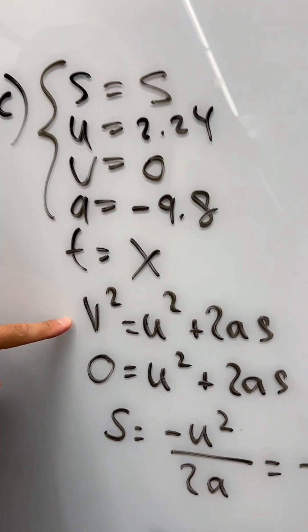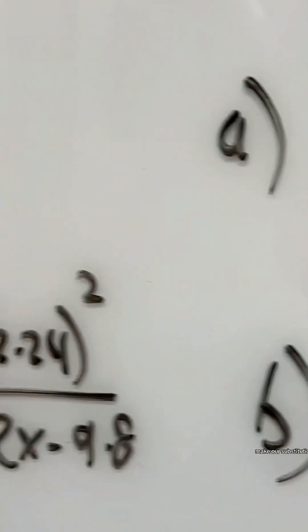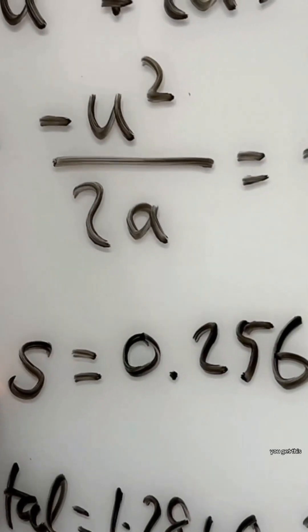Same formula, V squared. We rearrange it for S, make our substitutions. When you use your calculator, you get this.